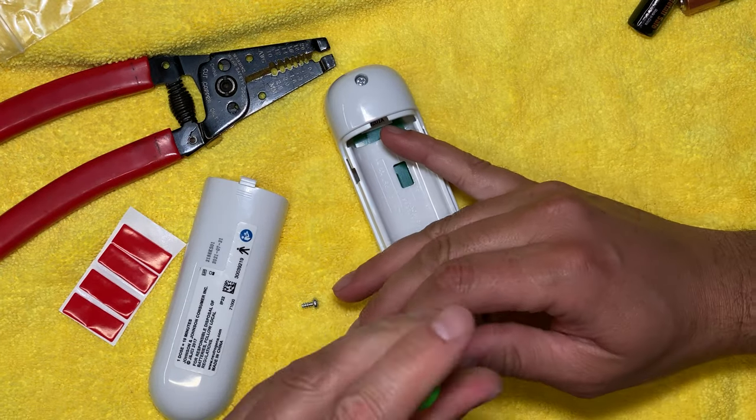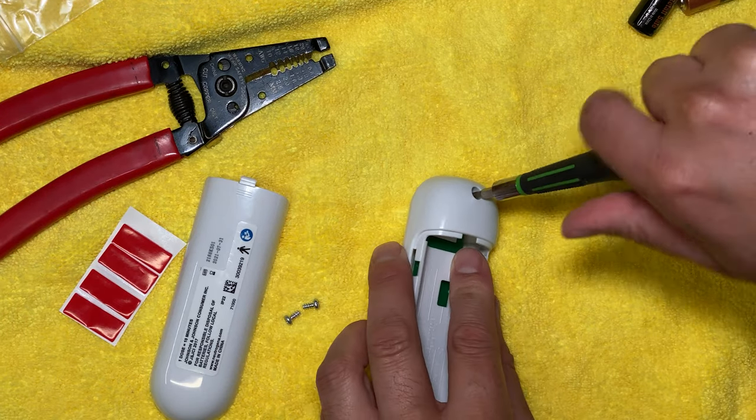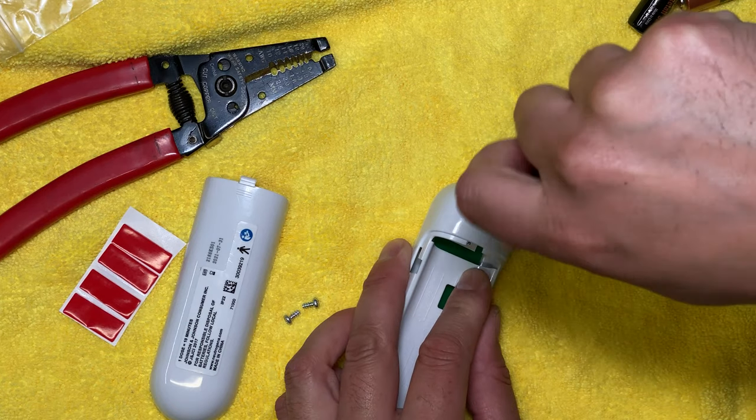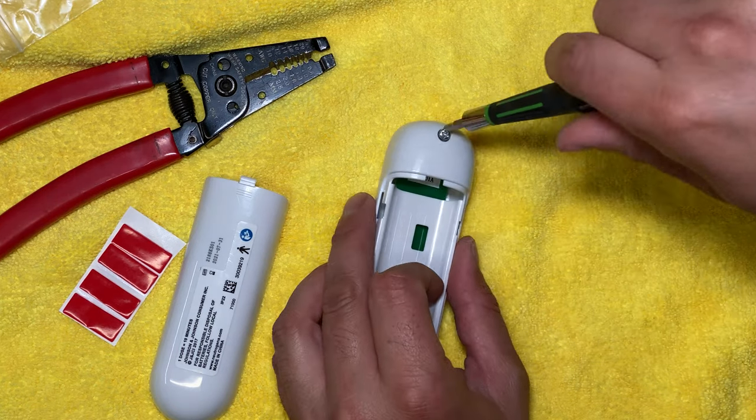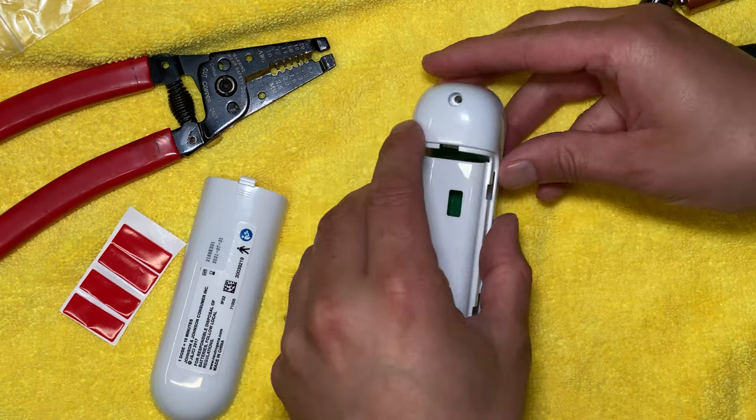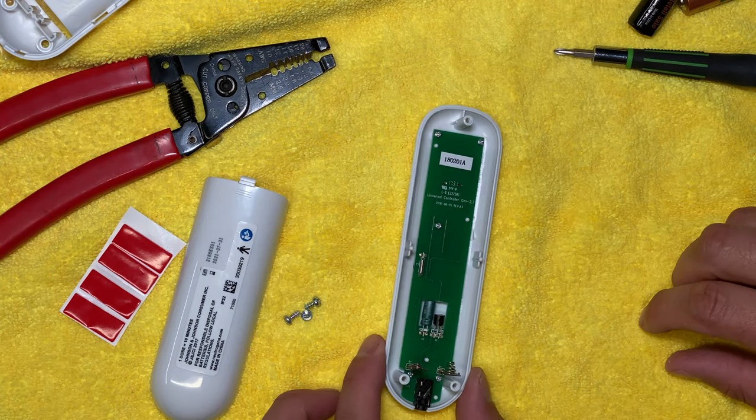So as you can see we already removed the battery cover and the four AA batteries and now we're using a screwdriver to remove the three phillips head screws for the casing. Once those are removed this white plastic casing will split in half and you want to be gentle here because there are some battery terminals underneath that you don't want to bend.